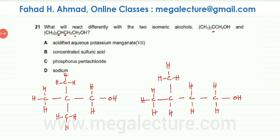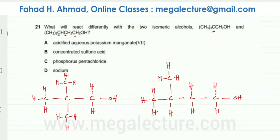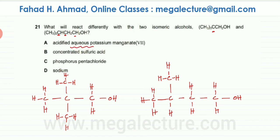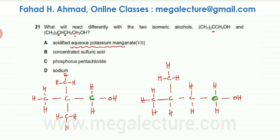Now I have my two structures in front of me. Let's figure out which reagent would react differently. The first option is an oxidizing agent. As you can see, both of these molecules are primary alcohols. Primary alcohols get oxidized by potassium dichromate — they change into aldehydes and then into carboxylic acids. Both carbon atoms are primary alcohols and they react in a similar way. Potassium permanganate would change from purple to colorless for both. So the first option reacts similarly with both.